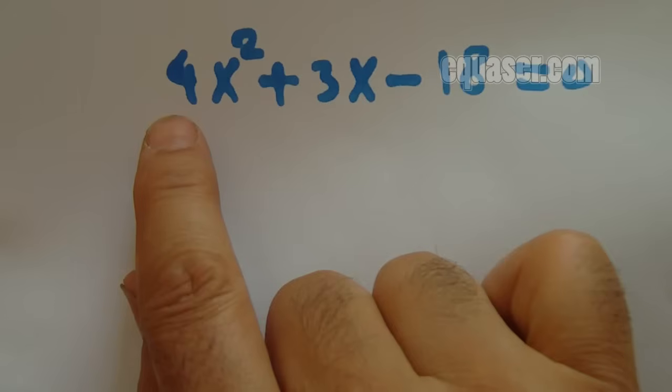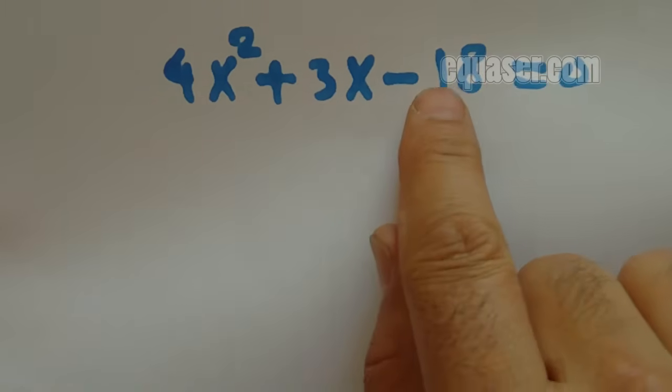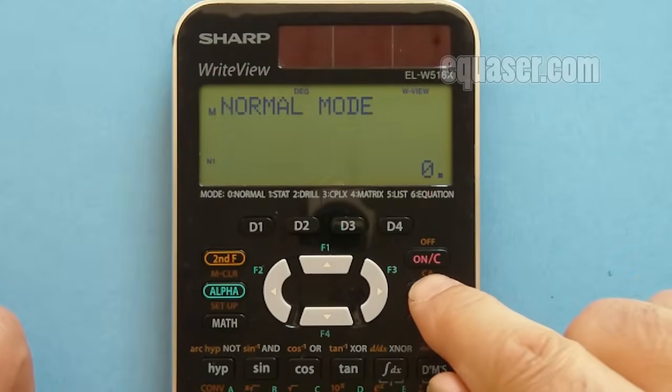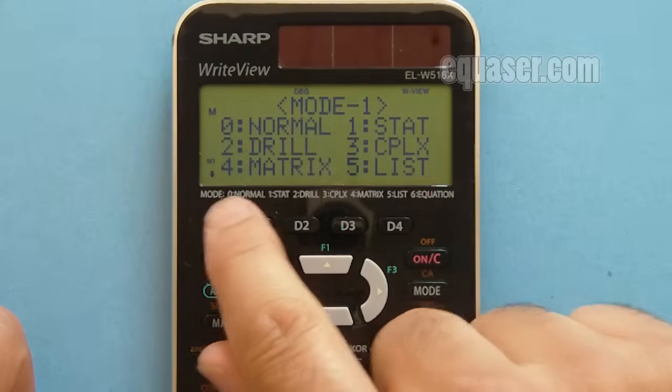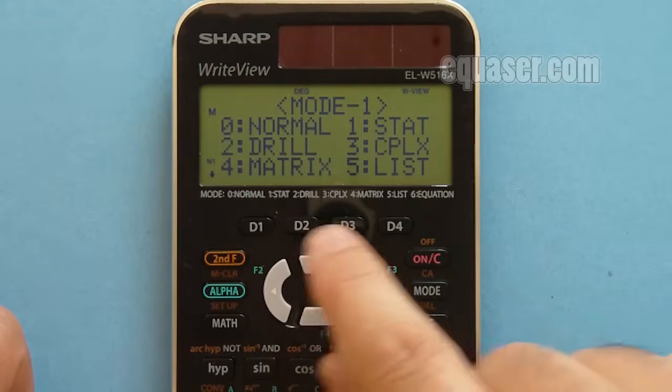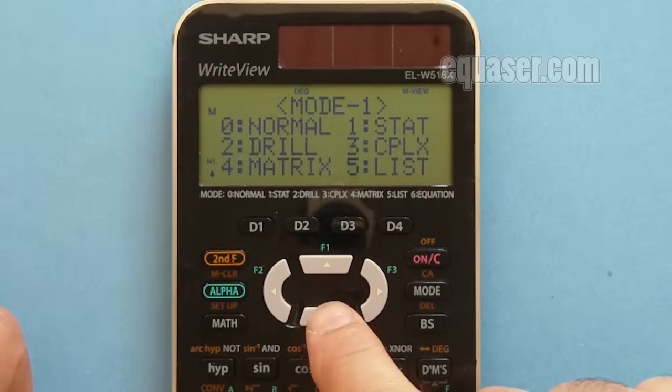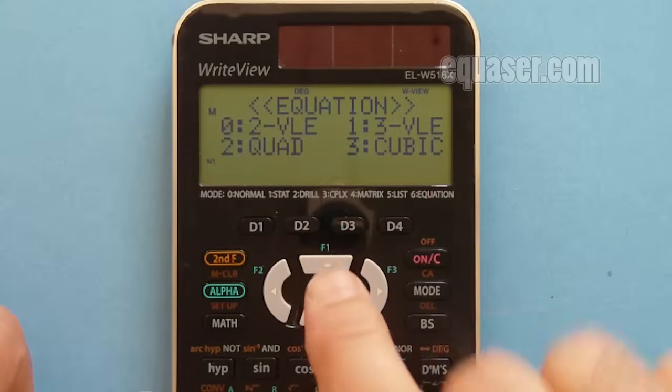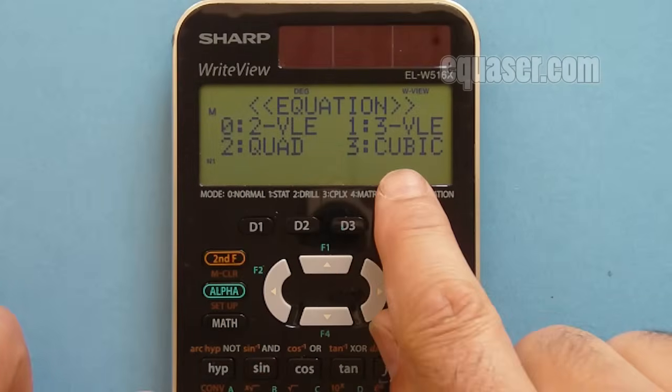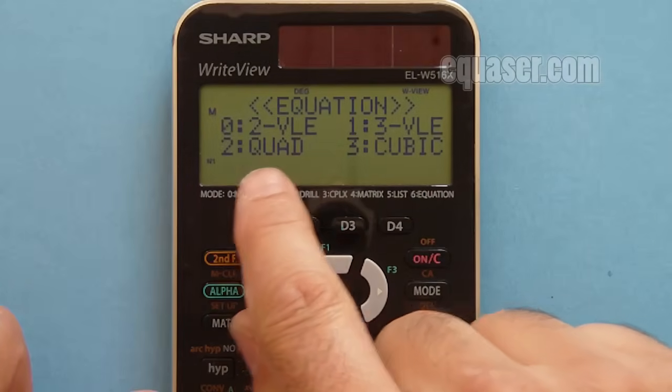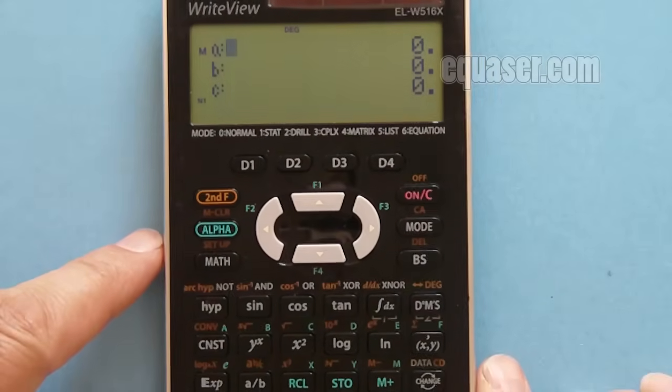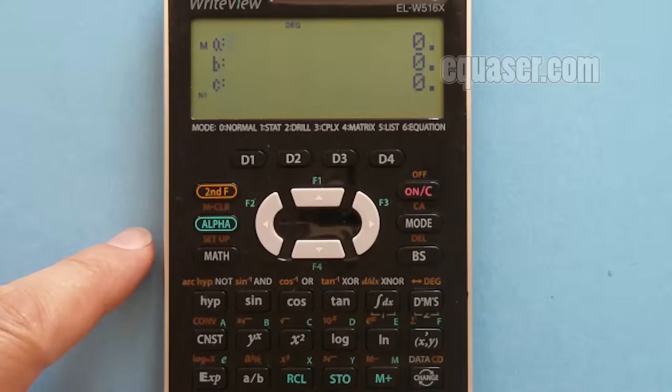My calculator is in normal mode. I have to go to equation mode. I press the mode button and scroll down. This arrow shows we have one more screen. I press the down arrow to equation, then press 6. On this screen we have quad and cubic. Quad refers to quadratic equation. I press 2.